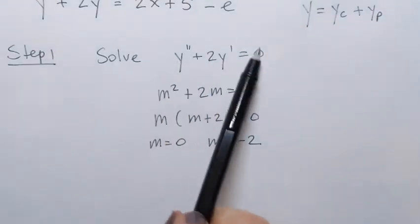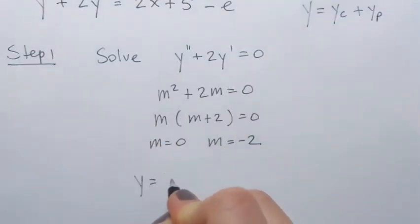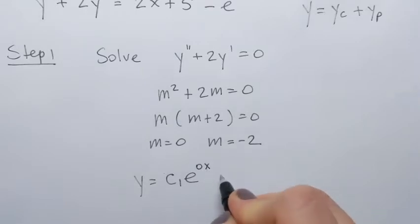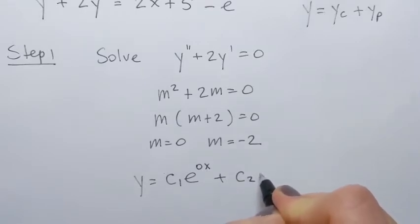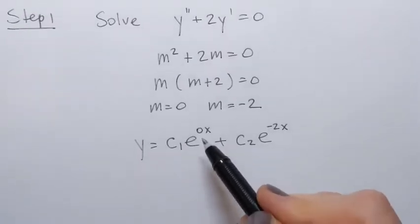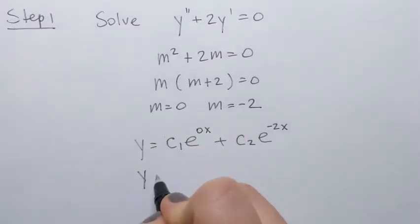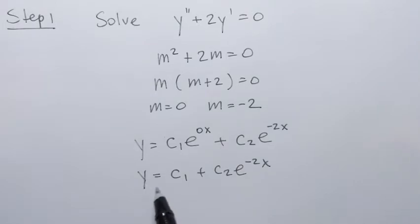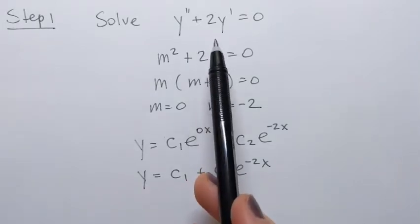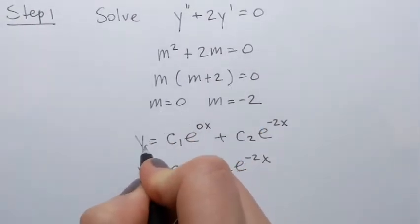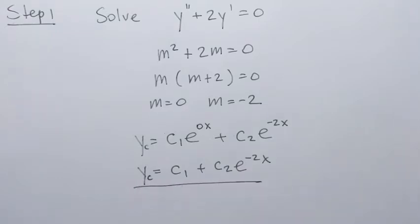That means the general solution to this homogeneous equation is y equals c1 times e to the power 0x plus c2 times e to the power negative 2x. Since e to the power 0x equals 1, the general solution simplifies to c1 plus c2 e to the power negative 2x. This is the complementary function yc.